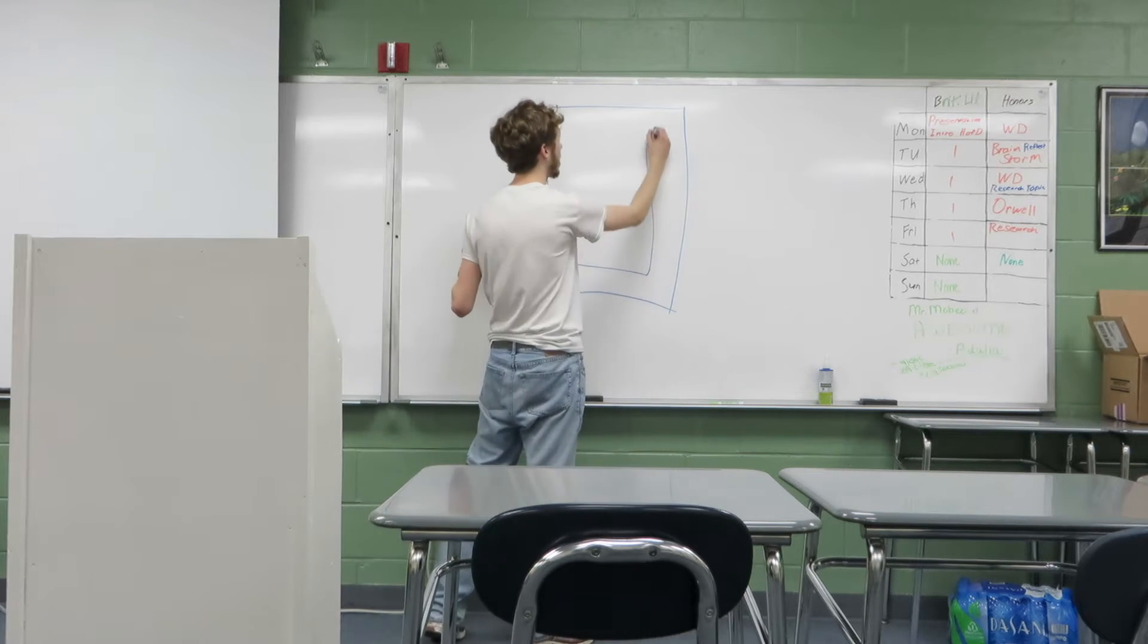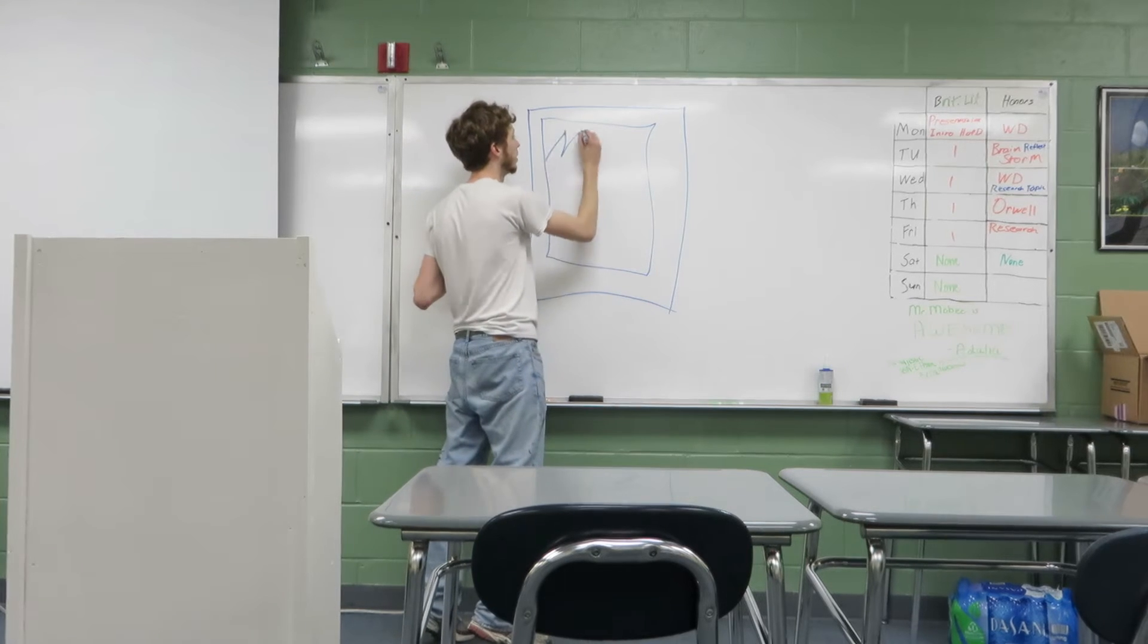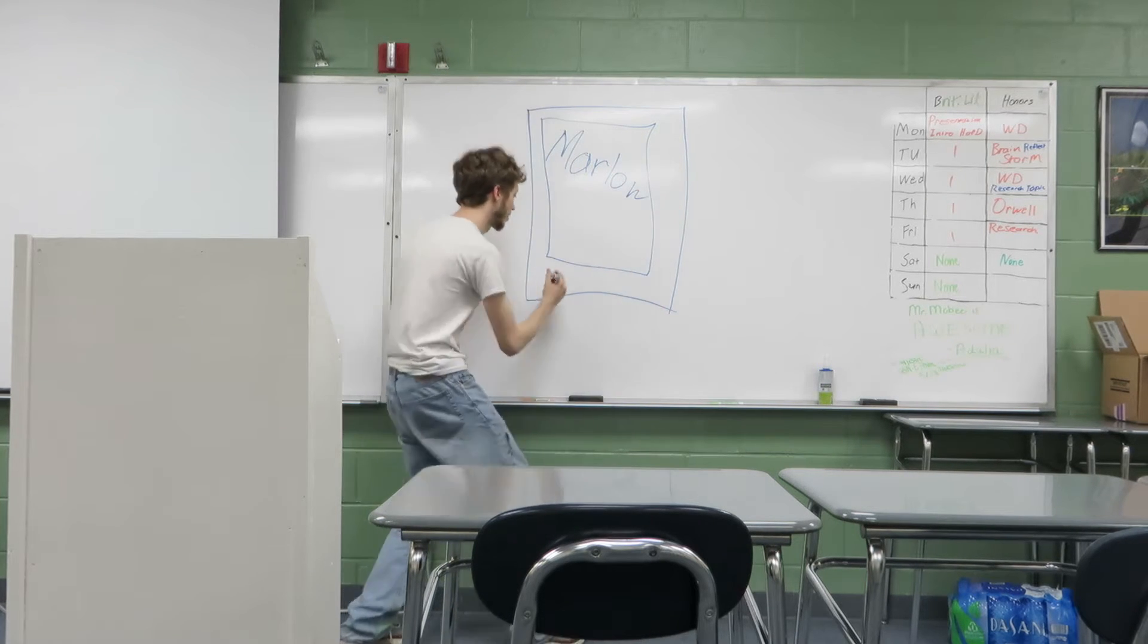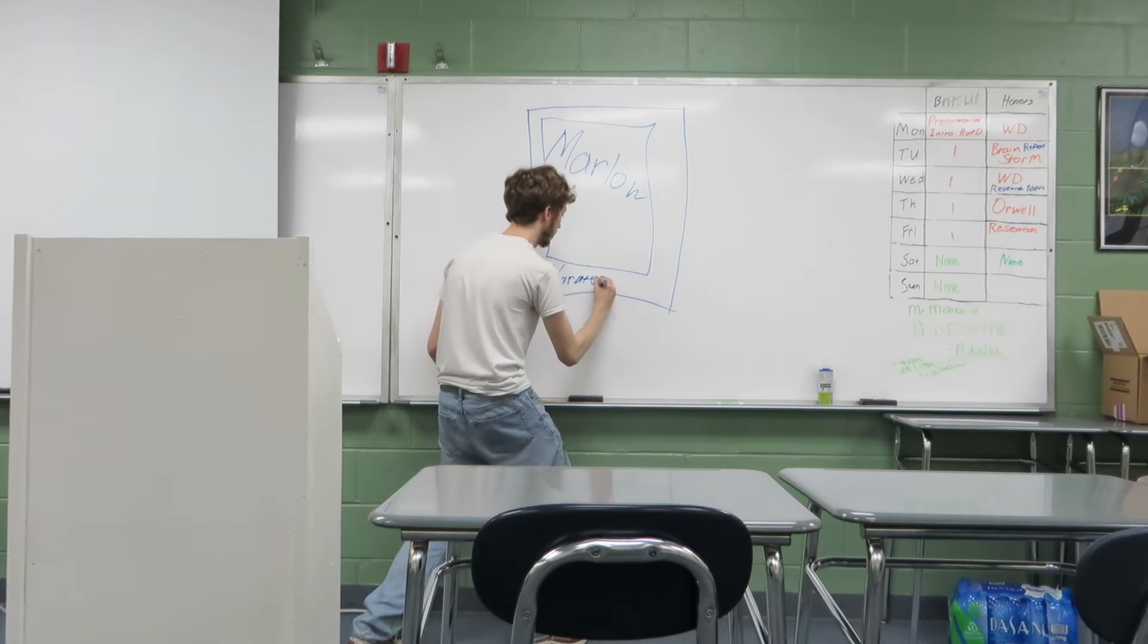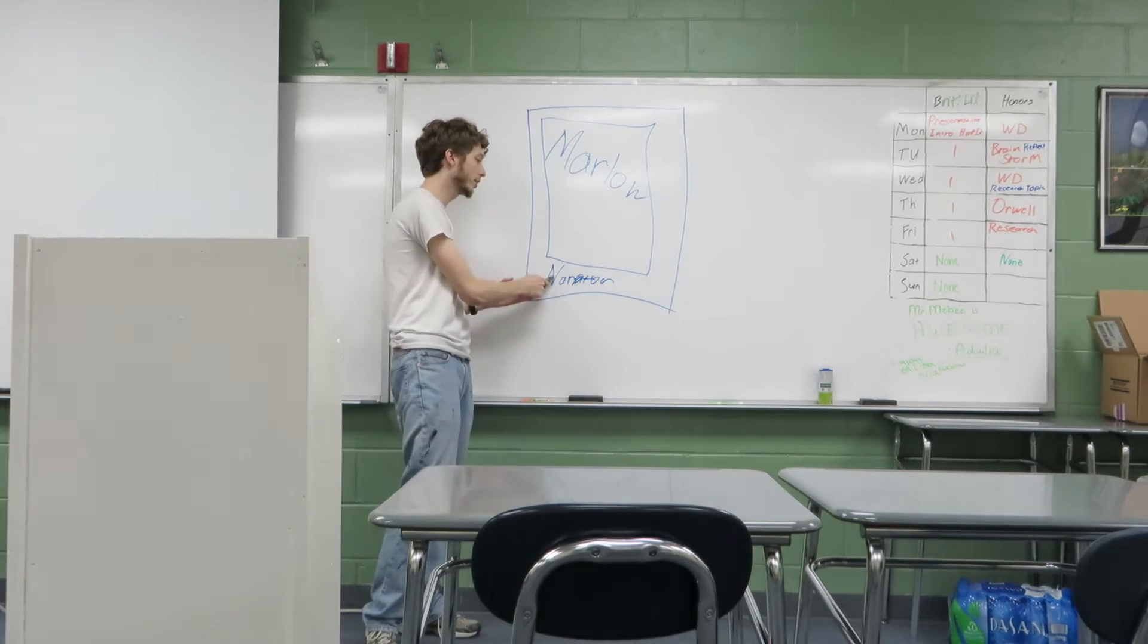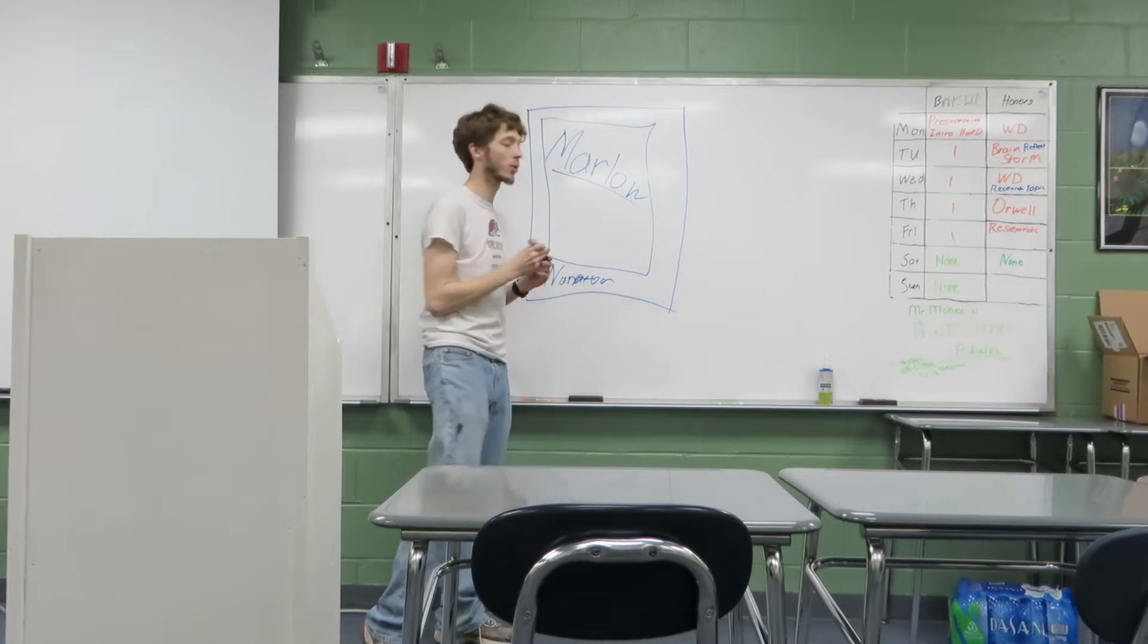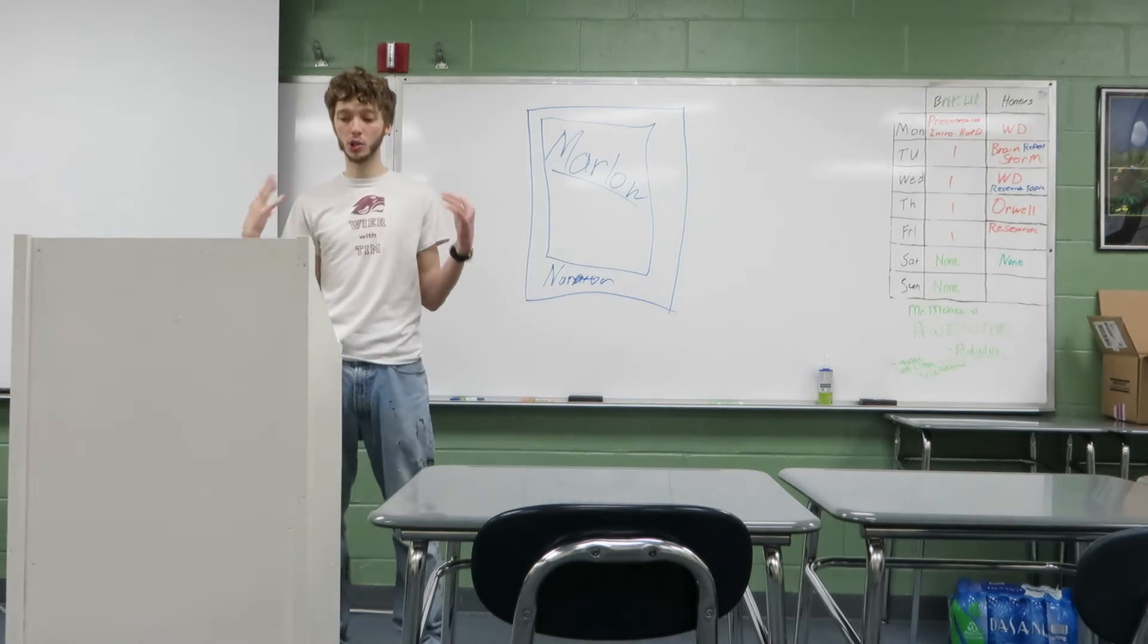So here you have your frame story, right? And I know you've studied these before. In the middle of your frame, you have Marlow, and on the outside, you have the narrator. And you should be able to tell by the fact that the narrator is not named, that he's not as important as Marlow. This is our key story here. So where we got in our text today is diving into Marlow's story.